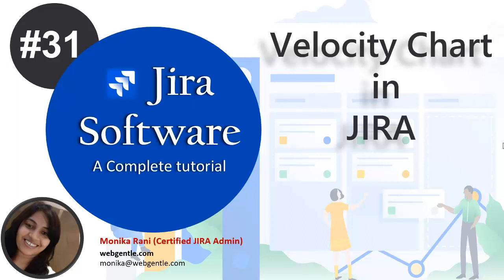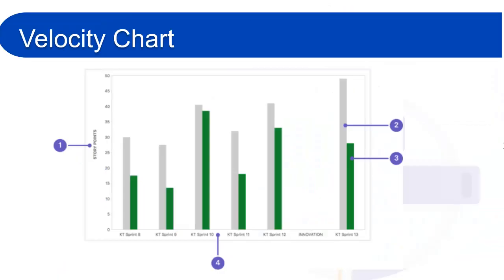Now we will see how the velocity chart looks and how you can read it. In the X-axis we have the number of sprints, and in the Y-axis we have the estimation statistic. The estimation statistic could be story points, hours, number of counts, business value — whatever you have already set in your board setting for estimation statistic.